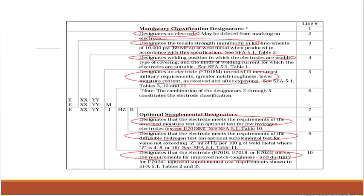For example, take E7018. 'E' means it designates an electrode. '70' designates the minimum tensile strength in ksi. 'XX' designates the tensile strength, and 'YY' designates the welding position — which position you can perform welding with this particular electrode.